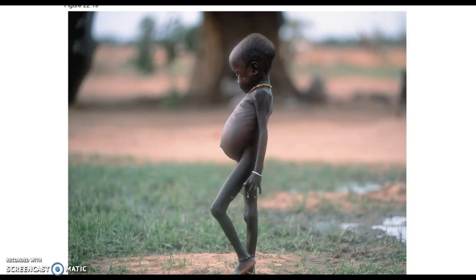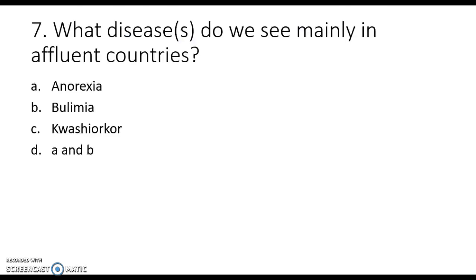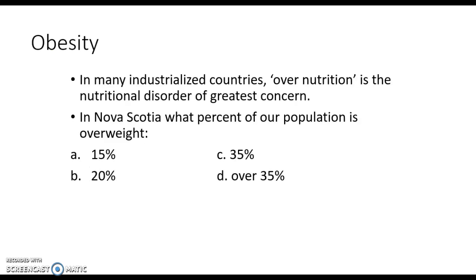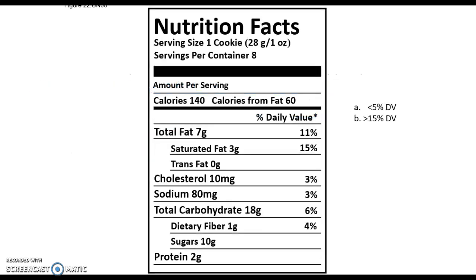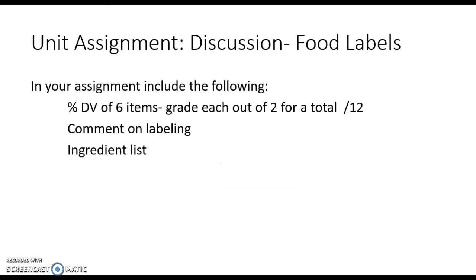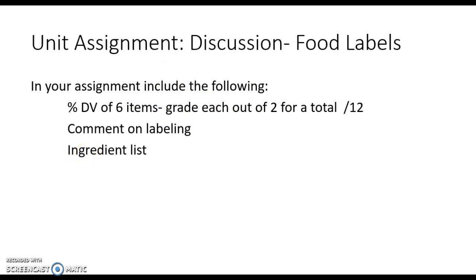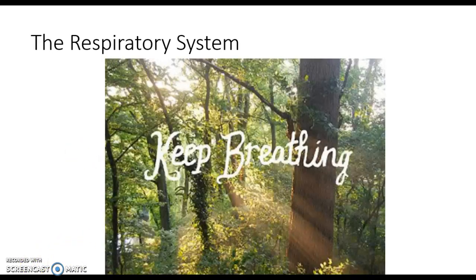Malnutrition means having an improper or insufficient diet. The most common concern globally is a lack of protein, which causes swelling in the belly. In more affluent countries we see things like anorexia and bulimia — make sure you look those up in your text. About 37% of Nova Scotians are obese these days. The rest is covered in our food label assignment, and you're all doing a great job so far. Use our discussion board for any further questions — that wraps up our digestive system. I'll see you again for the respiratory system.